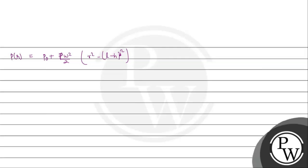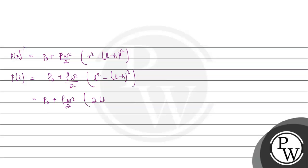We replace R with L. So P_L is equal to P₀ plus ρω²/2 times (L² minus (L minus H)²), which simplifies to P₀ plus ρω²/2 times (2LH minus H²). Then we use Bernoulli's theorem to relate the pressures.